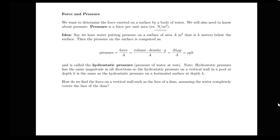Let's look at pressure in a little more detail. Let's say that we have water putting pressure on a surface of area A square meters that is h meters below the surface. We have some water, a horizontal surface below the water, and some pressure being exerted on that surface. The pressure is computed as force divided by area, where force equals mass times acceleration.